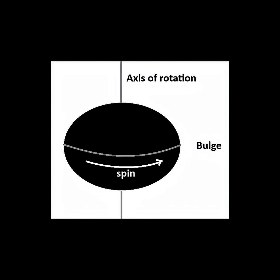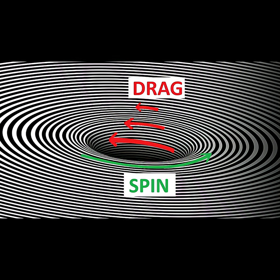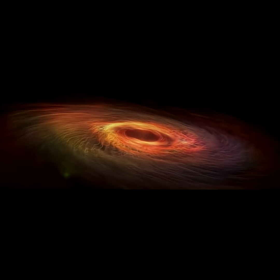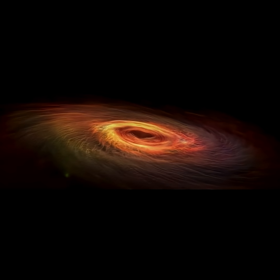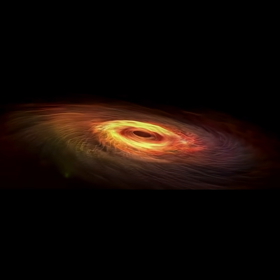Depending on how fast it is spinning, the black hole will also exhibit a characteristic bulge along its equator, with well-defined north and south poles along its axis of rotation. A spinning black hole will also drag space-time around with it as it rotates. This twisting of space-time can be detected by looking at the twisting of gases as they fall into the hole. The rotation is fastest closer to the hole and slower away from it.